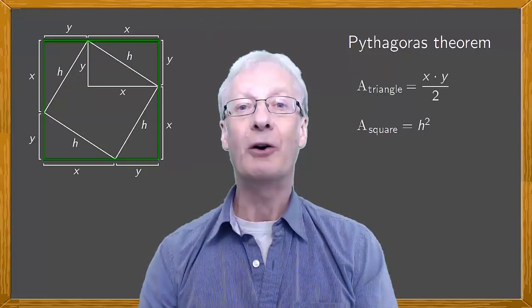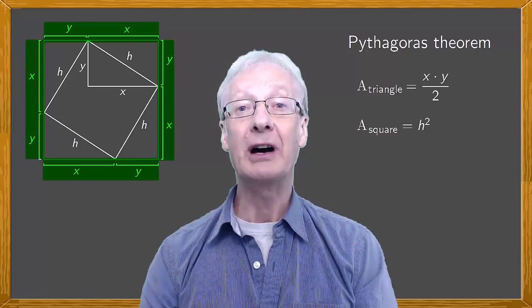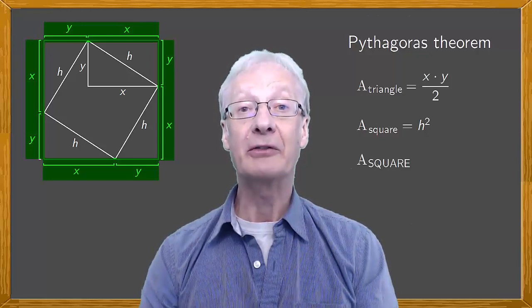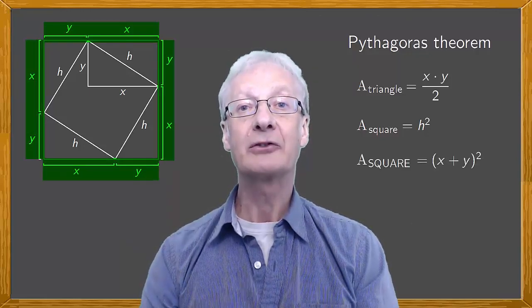For this new square, all the sides measure x plus y. So, the area of this square is x plus y squared.